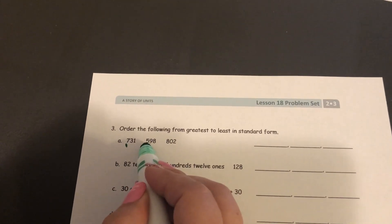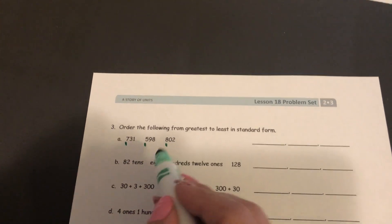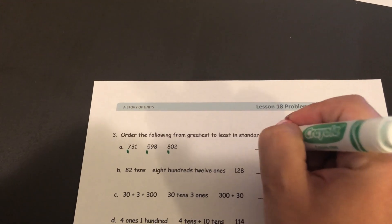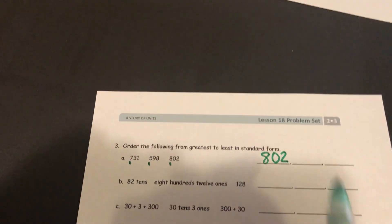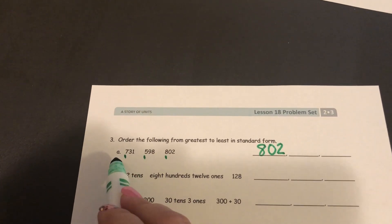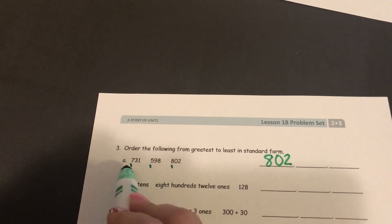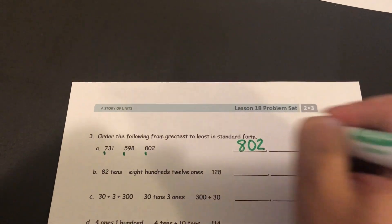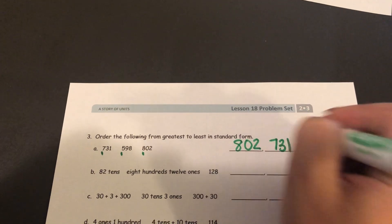So I'm comparing seven hundreds, five hundreds, and eight hundreds. I know eight is greater than five and seven. So 802 will be the greatest. If I want to find out which one is the least, well, I know five is less than seven. So 598 would be the least, which leaves 731 to go in the middle.